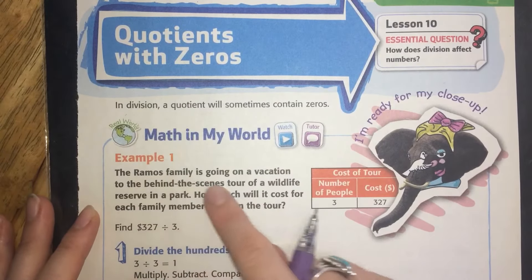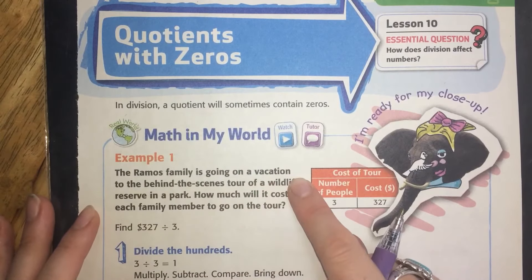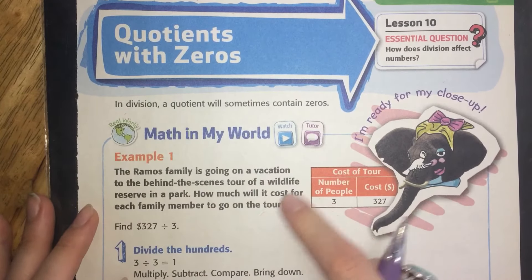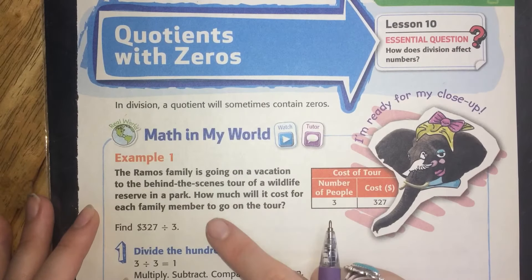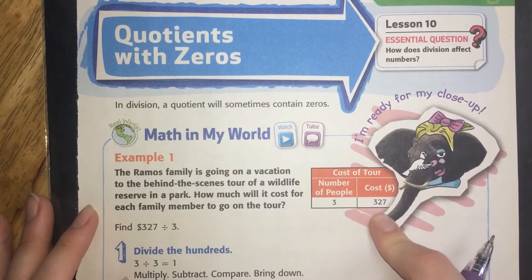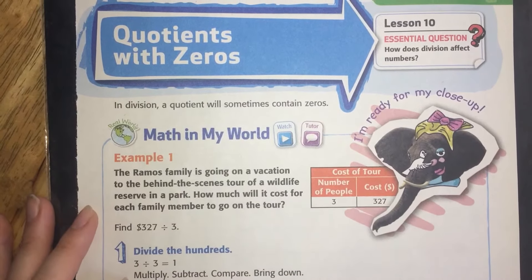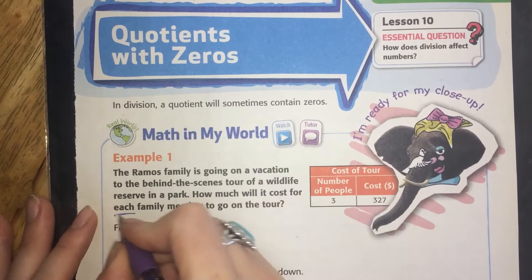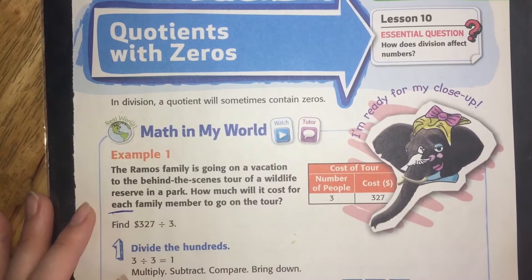The Ramos family is going on a vacation to the behind-the-scenes tour of a wildlife reserve park. How much will it cost for each family member to go on the tour? The number of people is 3 and the total cost is 327. So you need to find each. That's a good clue that we're doing division.